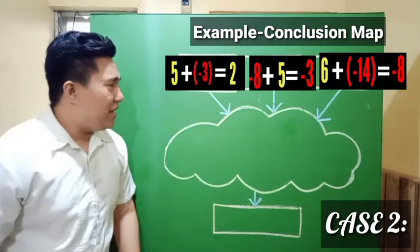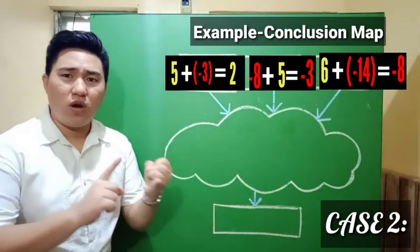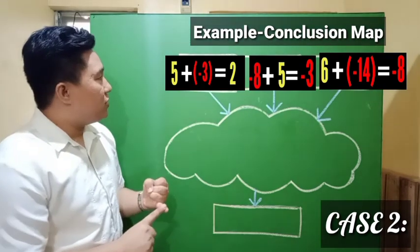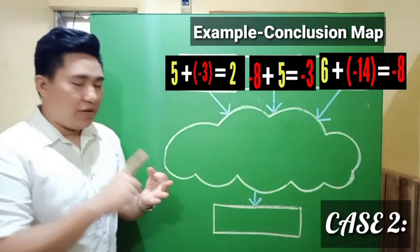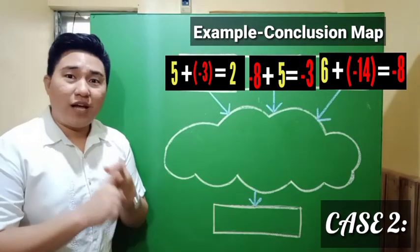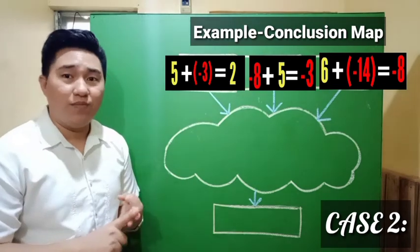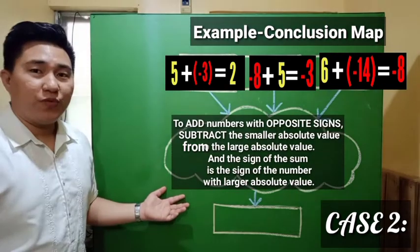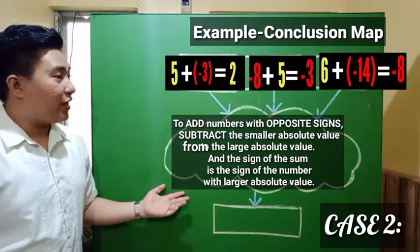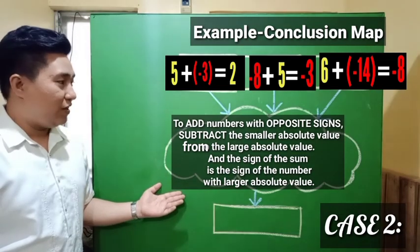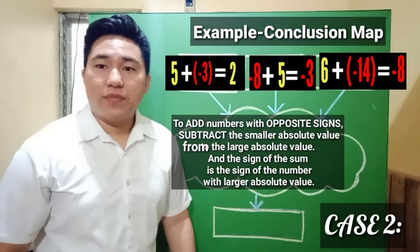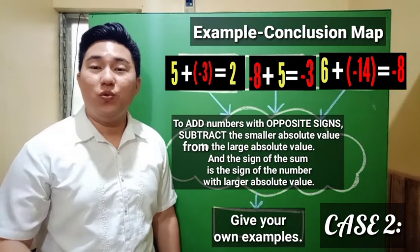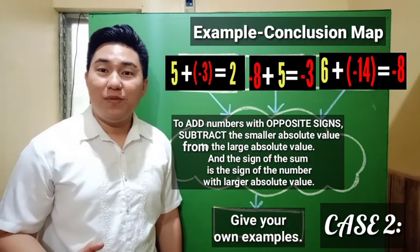So combining all those observations: first, the two numbers have different signs; second, we get the difference of the two numbers; third, the sign of the result is the sign of the larger absolute value. To add numbers with opposite signs, subtract the smaller absolute value from the larger absolute value, then the sign of the sum is the sign of the number with the larger absolute value. Please comment your own example in the comment section.